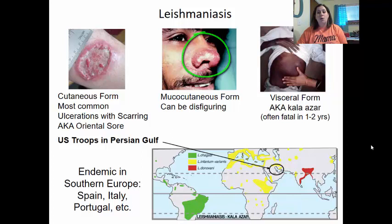Leishmaniasis is endemic in southern Europe, Spain, Italy, Portugal, and other areas. US troops were exposed to this in the Persian Gulf with high case numbers. It is found across endemic regions of South America and other parts of the world.